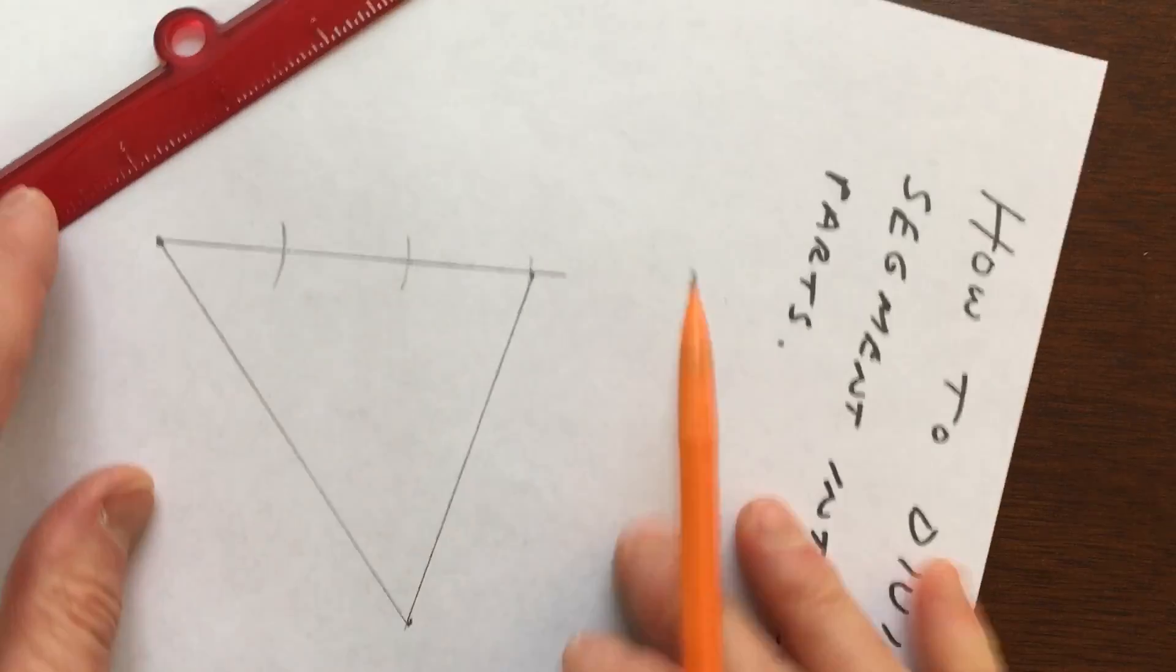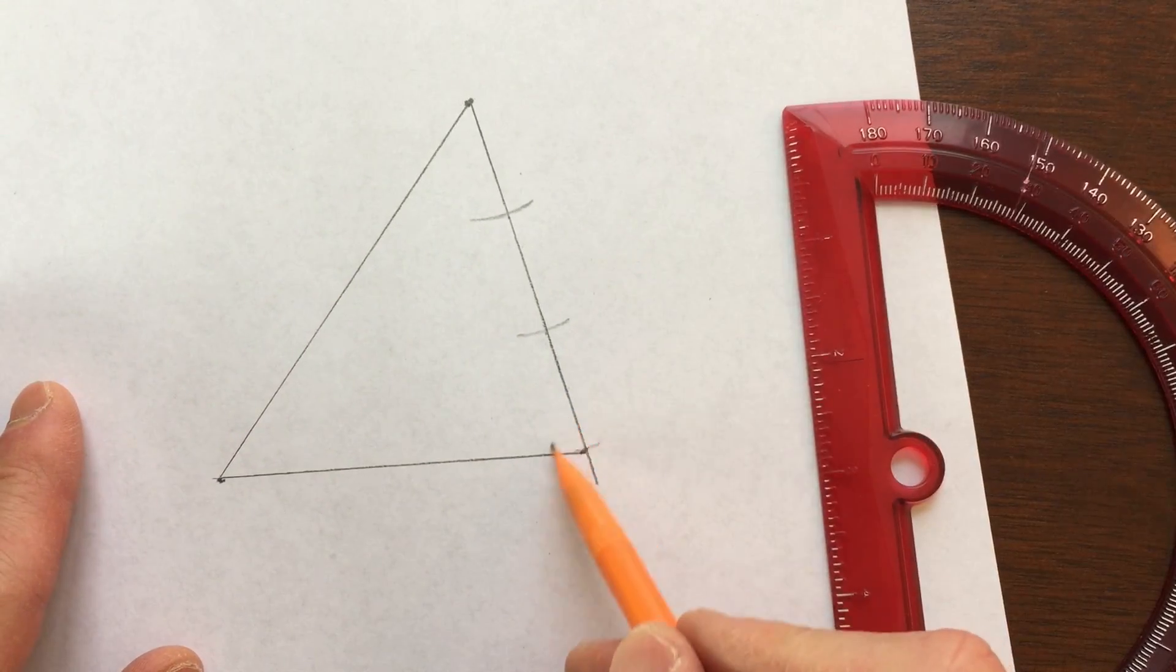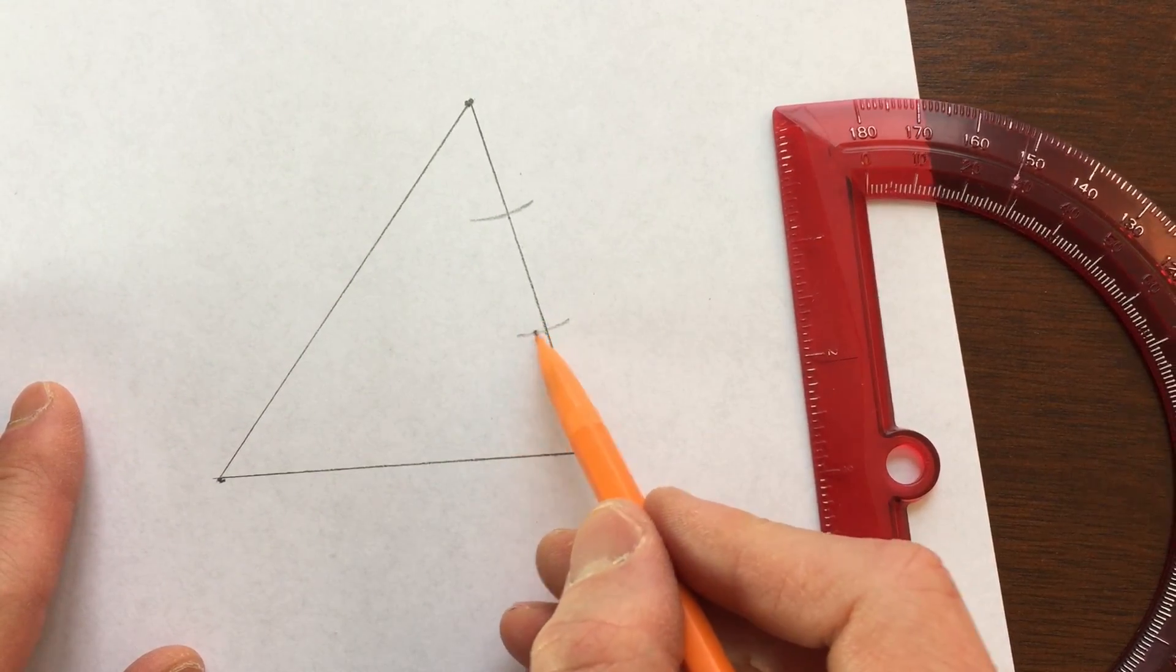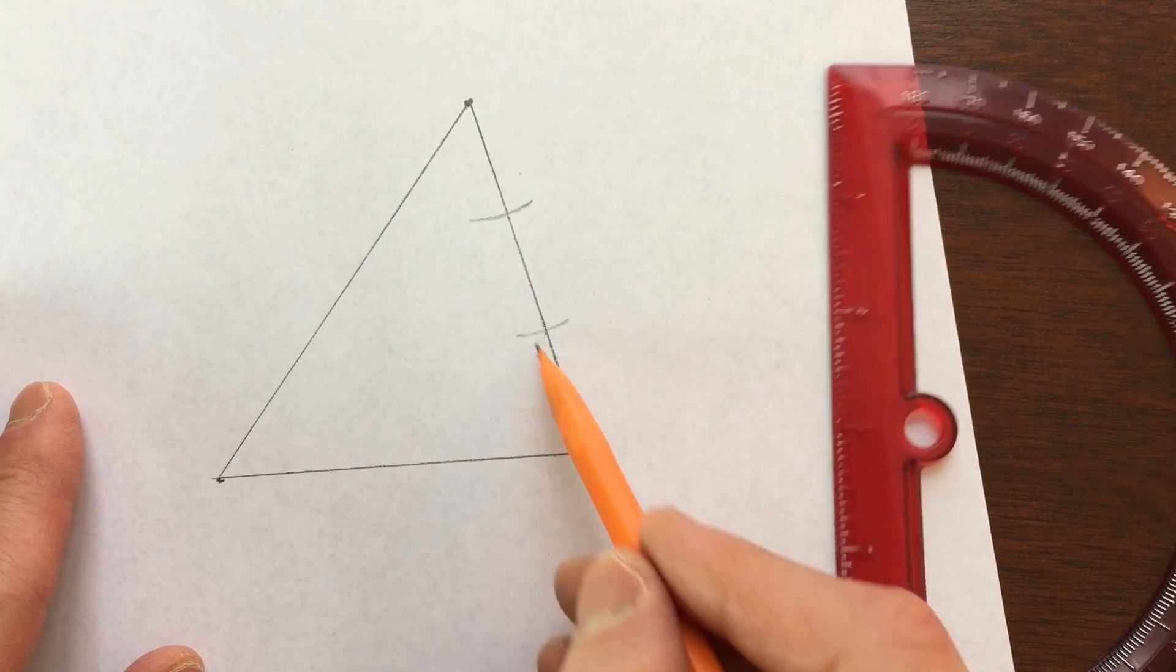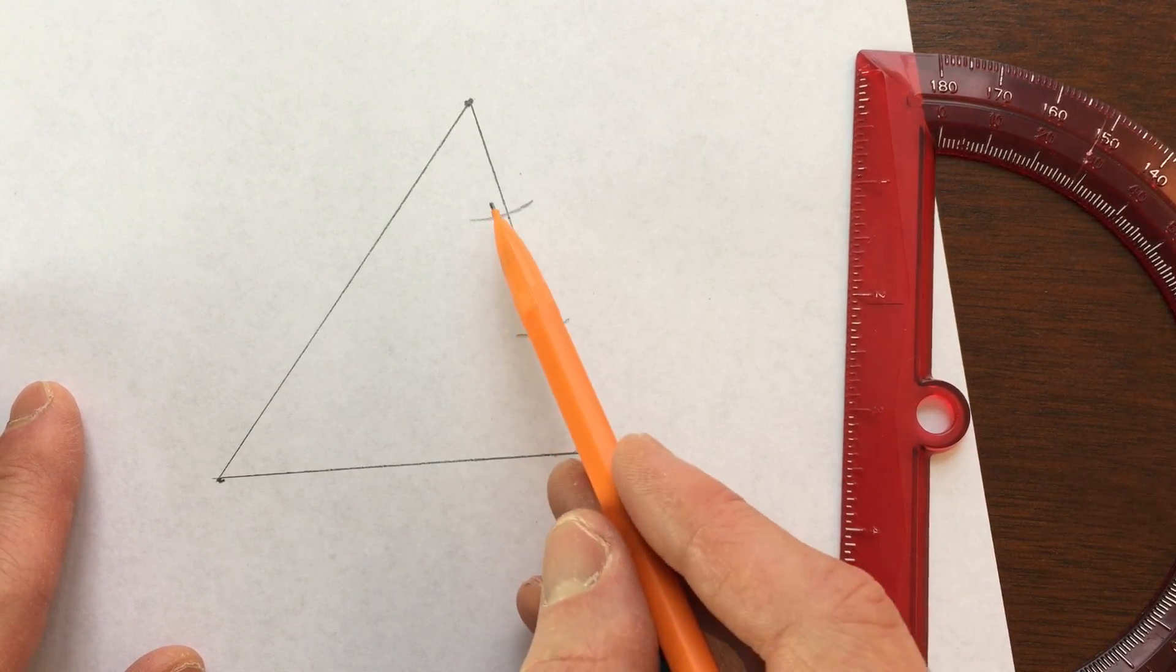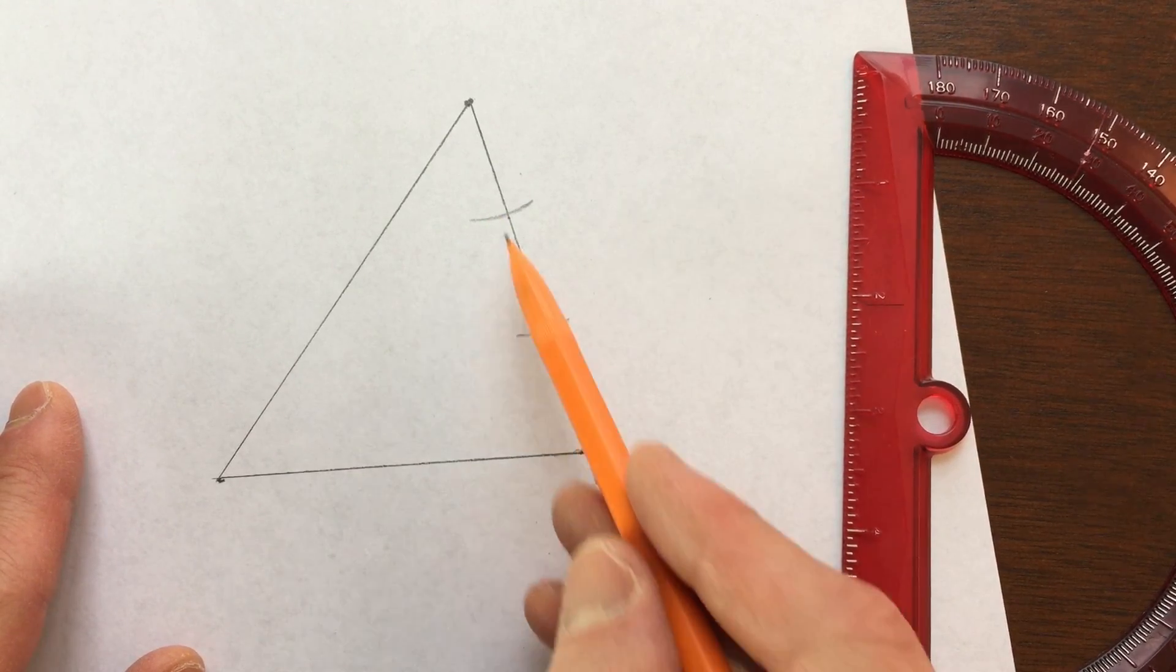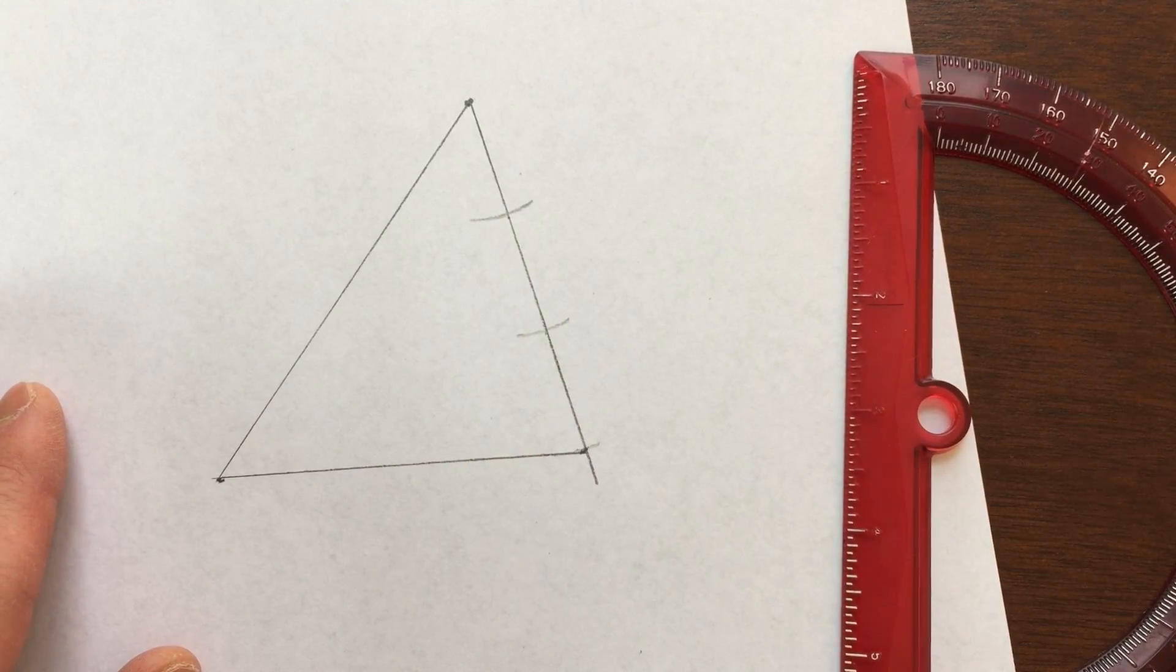So the key to doing this construction, if you've seen some of my other construction videos, is you want to copy this angle over onto here. And you do the same thing here onto this one. So basically you're copying this angle, and this is using the corresponding angles converse theorem. Basically, if the corresponding angles are congruent, then the lines are going to be parallel. So let's go ahead and do that.